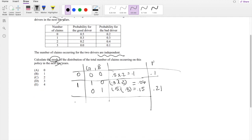And then when can you have 2? Well, that can happen when good driver and bad driver both have 1. So that's going to be 0.3 times 0.3, which is 0.09. Or when good driver has 2 and bad driver has 0. So that is 0.2 times 0.2, which is 0.04.